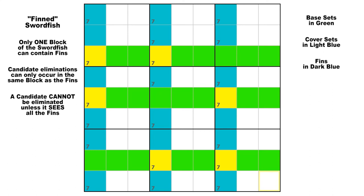There will be additional candidates in all of these cells in a real puzzle, but I just want you to zero in on what's happening with candidate 7 here in this diagram. As we learned in video number 12, when you have a situation like this, all the candidate 7s in the cover sets that lie outside the yellow intersection cells must be false.